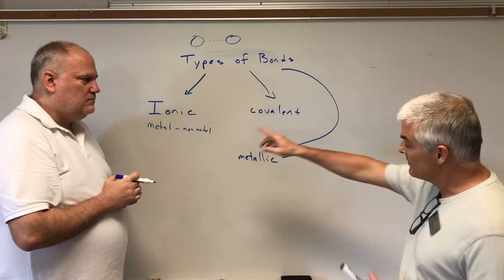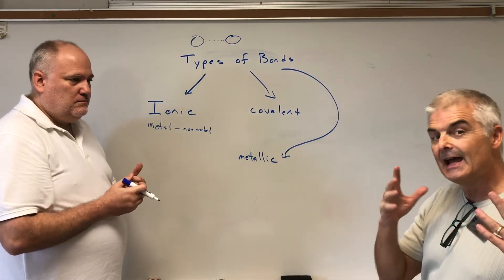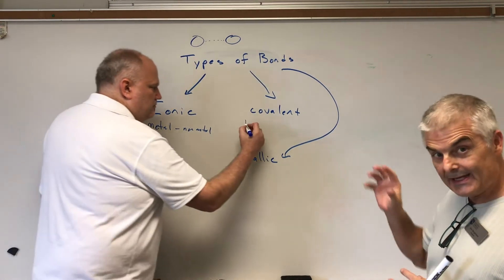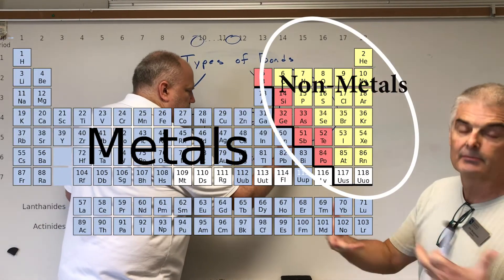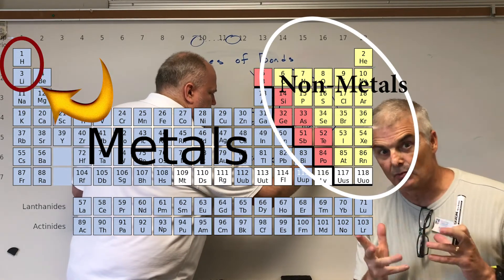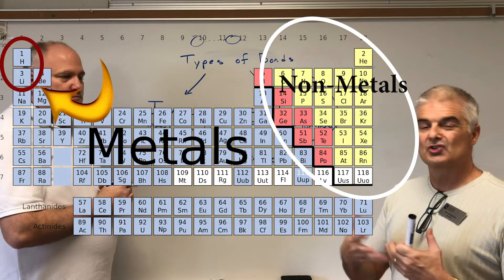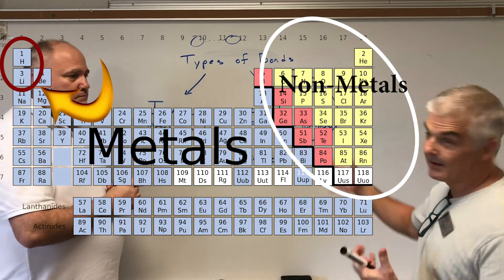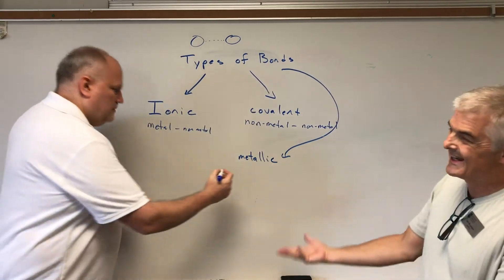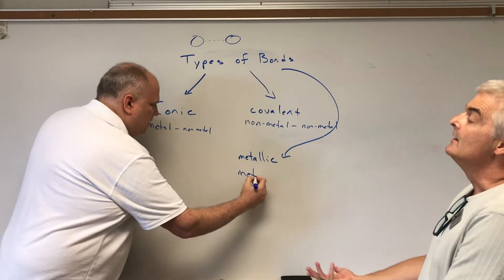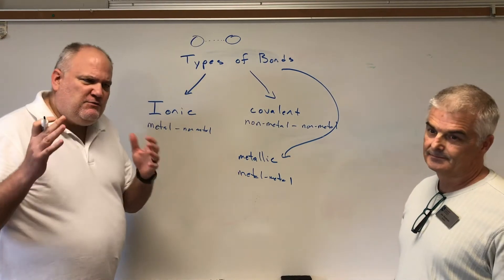Covalent bonding is non-metal to non-metal - upper right of the stair steps - like carbon with hydrogen, carbon with oxygen, or sulfur with oxygen. Hydrogen is actually upper left but is kind of a non-metal. And then metallic bonding is a metal with itself - metal with metal.